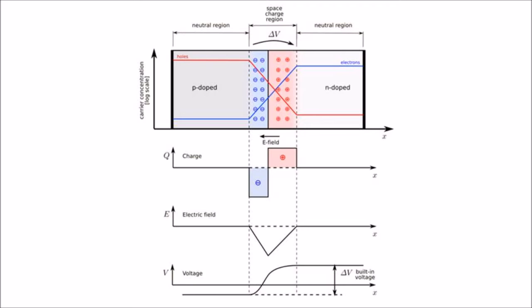The space charge region has the same charge on both sides of the PN interface. Thus, it extends further into the less heavily doped side. These are the zero biasing or the equilibrium condition of a PN junction.